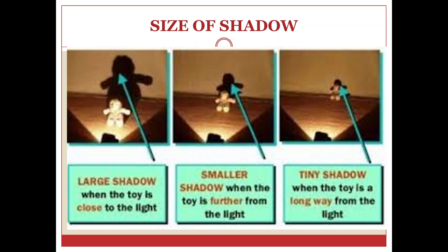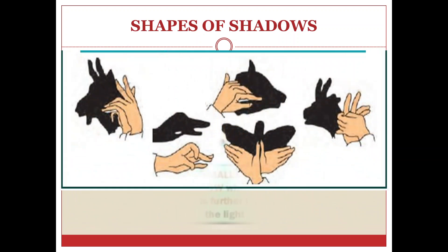As we move the toy away from the light, we see the shadow becomes smaller and smaller. So, the size of the shadow will be bigger if the object is closer to the light, and it will be smaller if the object is away from the source of light. Children, you can put your hands and fingers in different positions before a torch or a source of light and form shadows which may resemble the shadow of animals, as you can see here. Do try it, children.